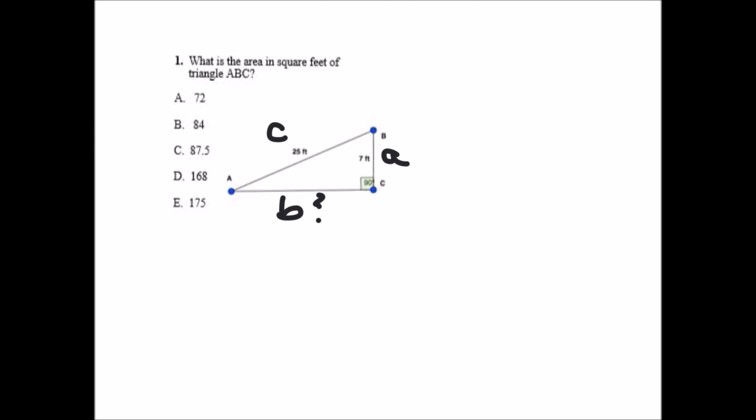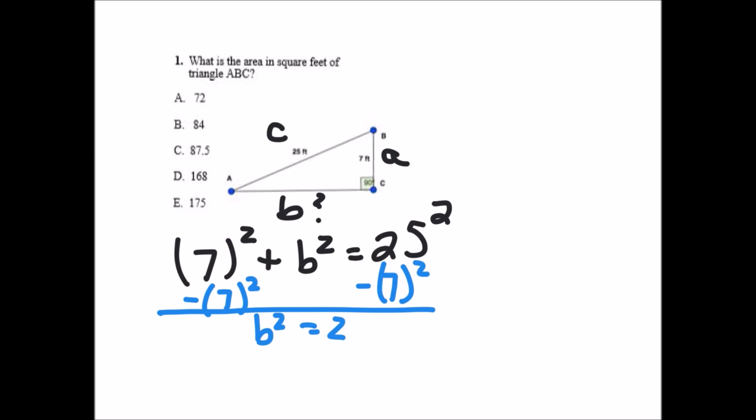If we write out the equation we get 7 squared plus B squared equals 25 squared. If we solve this algebraically we can move the 7 squared, take away 7 squared from both sides, we end up with B squared equals 25 squared minus 7 squared.